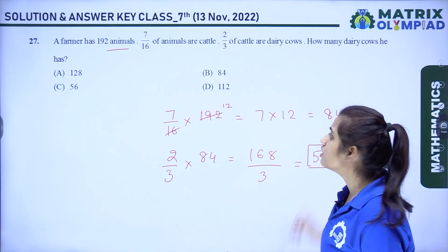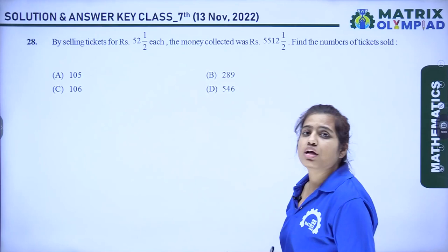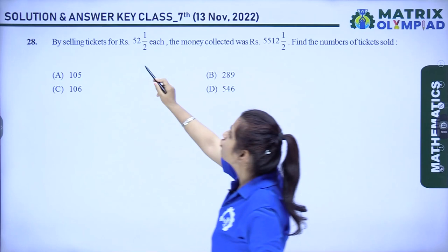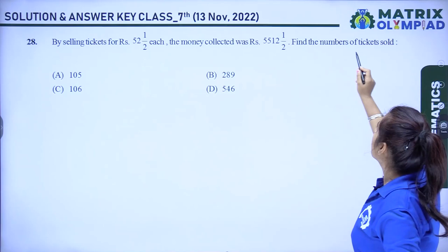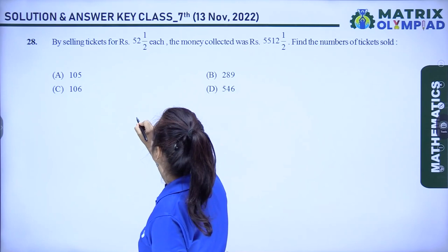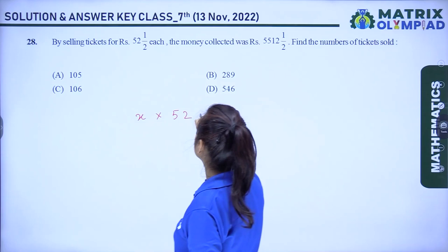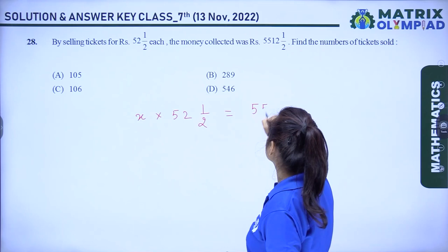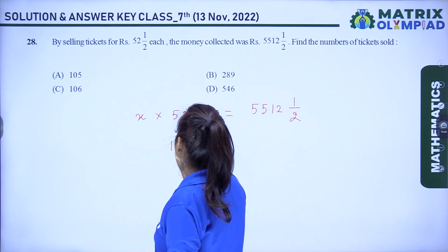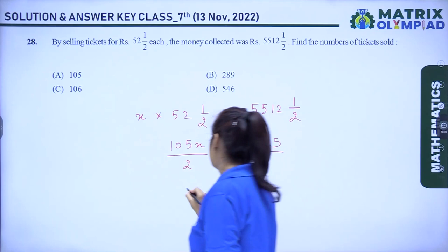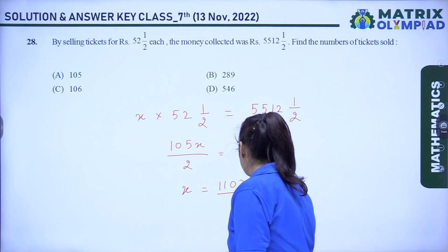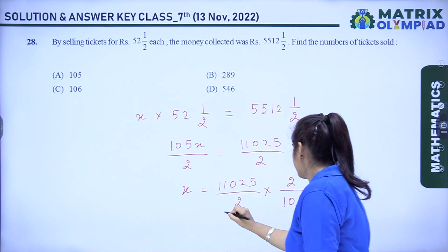Question 28: tickets sold at ₹52½ each totaling ₹5512½. Let number of tickets be x. So x × 105/2 = 11025/2. Solving gives x = 105. Option A is the correct answer.